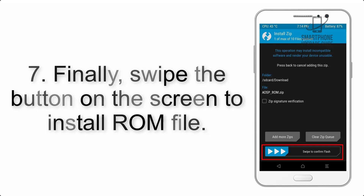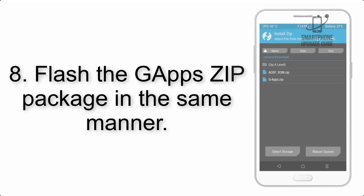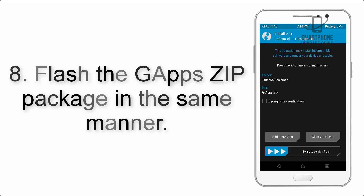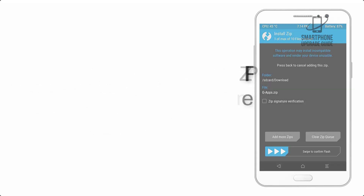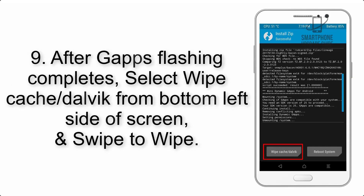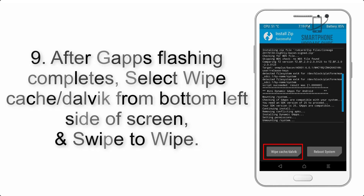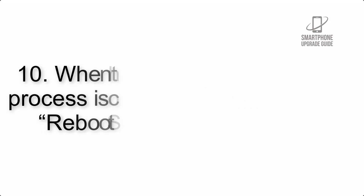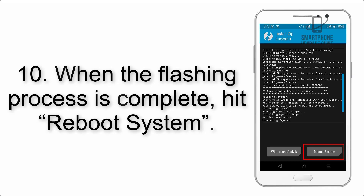Step 7: Swipe the button on the screen to install the ROM file. Step 8: Flash the GApps zip package in the same manner. Step 9: After GApps flashing completes, select Wipe Cache and Dalvik from the bottom left side of the screen and swipe to wipe.